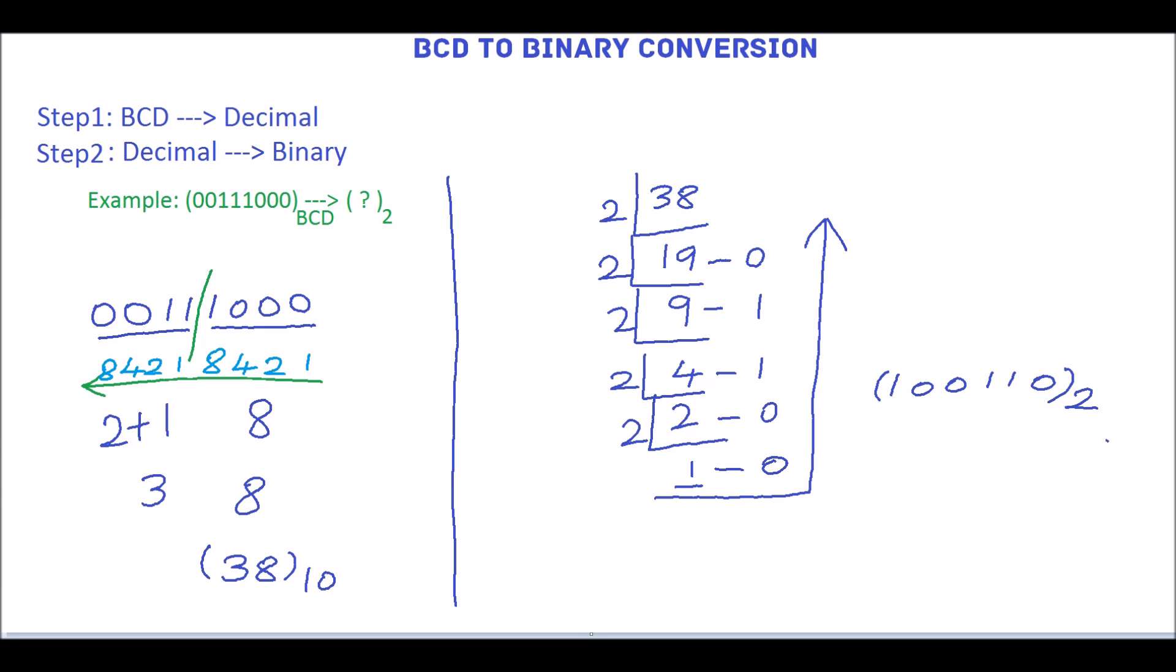So the BCD number 00111000 can be written as 100110 in binary. Thank you.